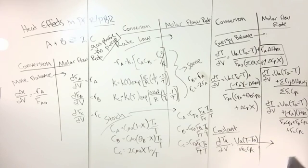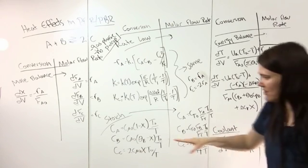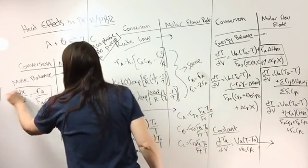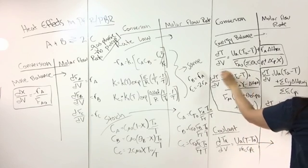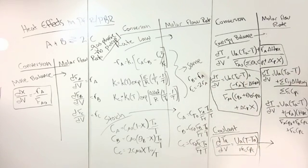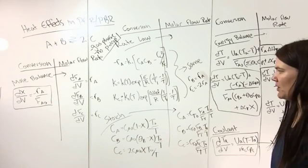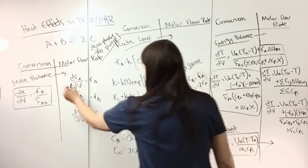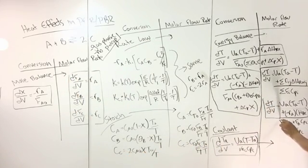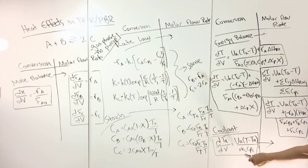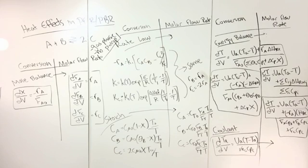Then you solve all these equations numerically using MATLAB or POLYMATH. For the conversion approach, you have three simultaneous differential equations. For the molar flow rate approach, you have three mole balance ODEs plus the energy balance, and if the coolant temperature varies, a fifth ODE — so five differential equations solved simultaneously.